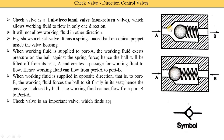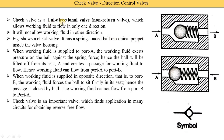So the check valve only supplies fluid in one direction. That is why it is called unidirectional, as mentioned at the beginning, and it is also called a non-return valve because the working fluid cannot return from port B to port A.